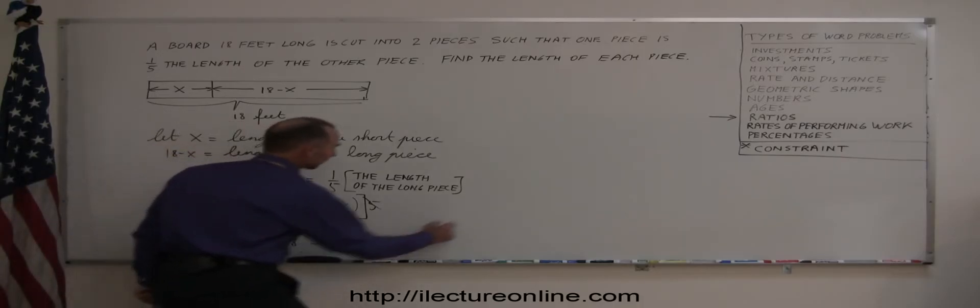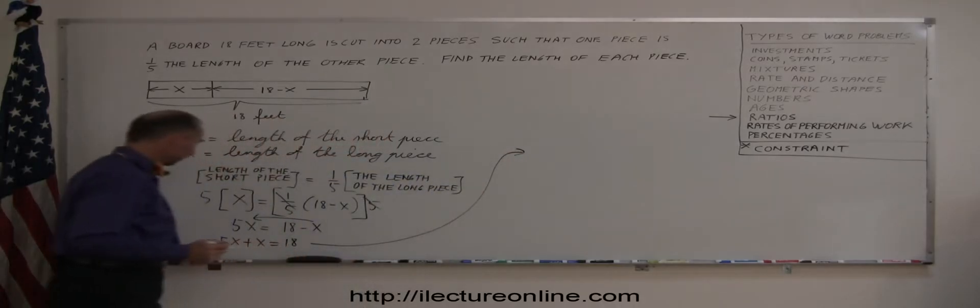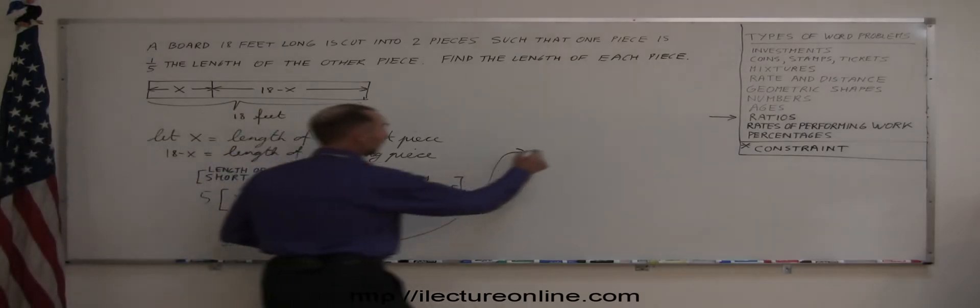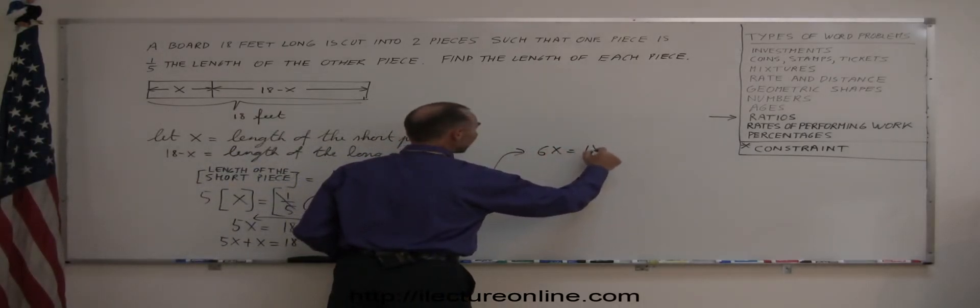Now let's move over here, because we're running out of room. So I combine the like terms on both sides, so 5x plus x, that's 6x equals the right side, still 18.